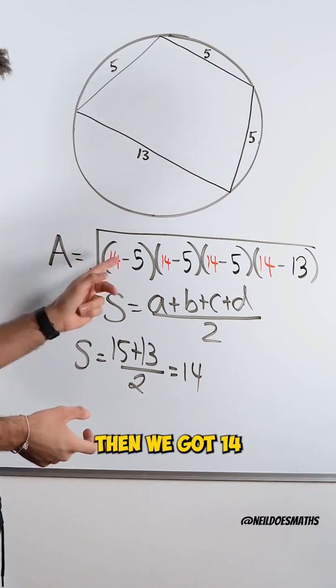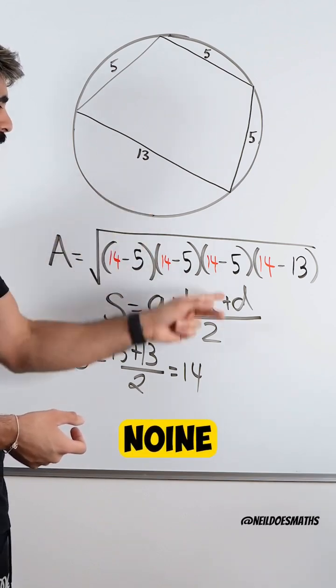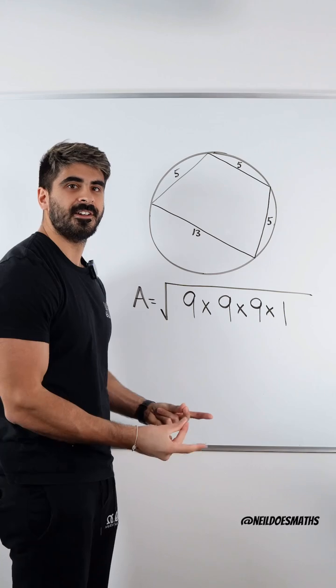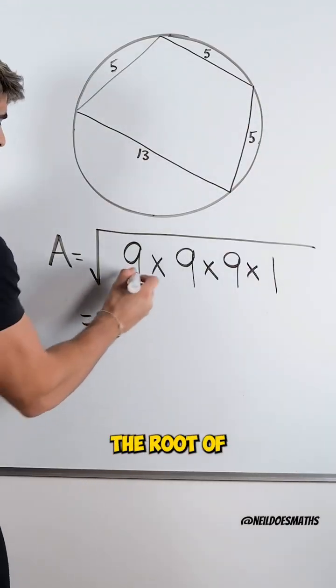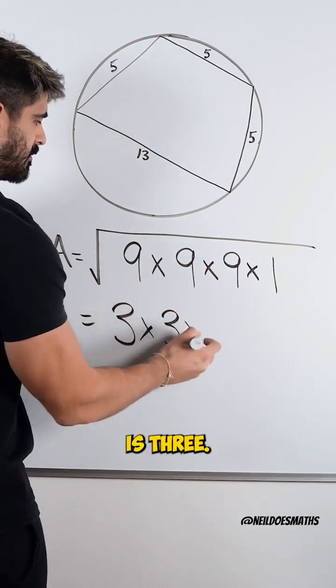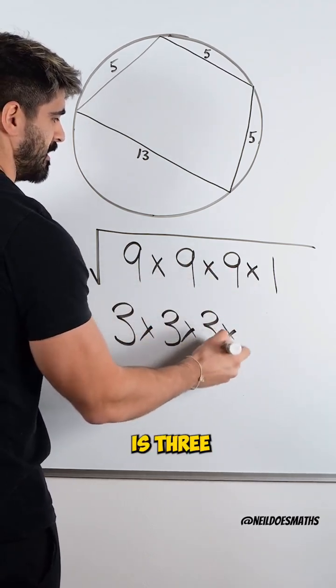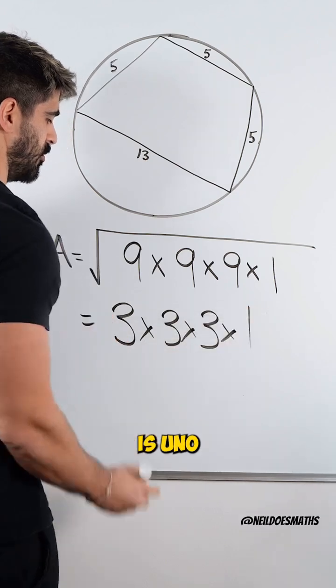Then we got 14 minus 5, 9, 9, 9, 1. Now all we need to do is root all of these numbers. The root of 9 is 3, the root of 9 is 3, the root of 9 is 3, the root of 1 is 1.